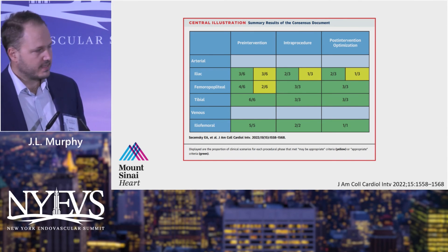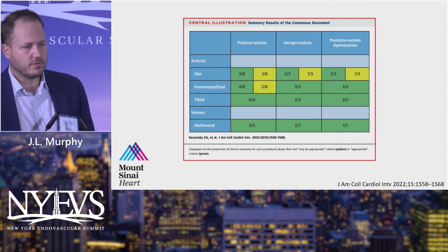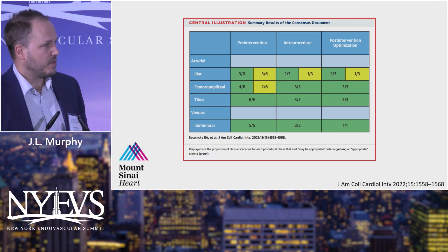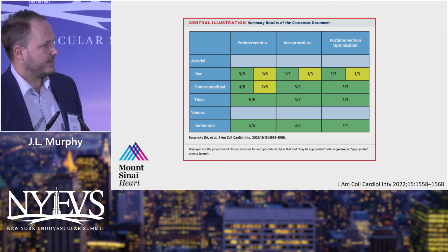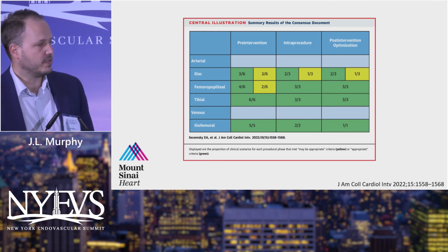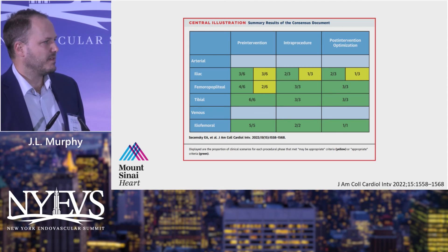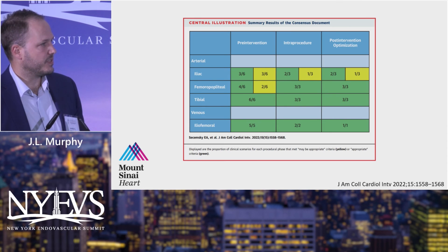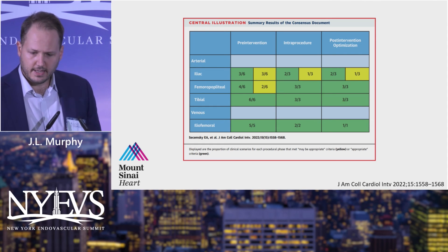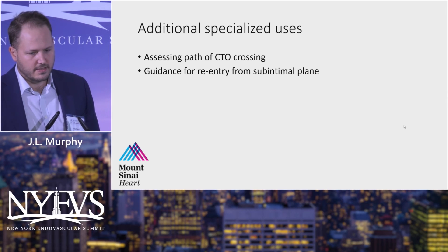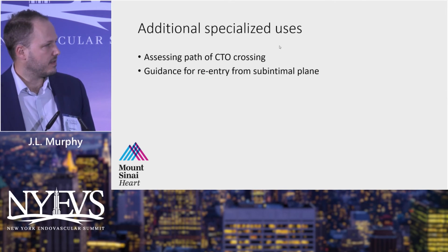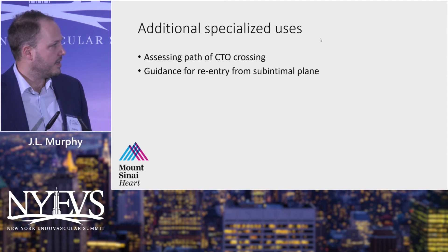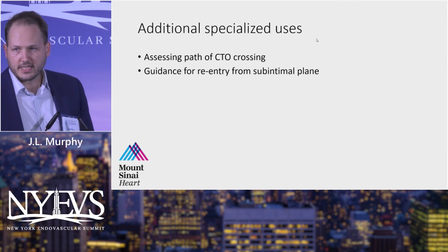This is reflected in a consensus document from experts at VIVA 2021, which concluded that IVUS is probably appropriate in almost everything we do in the lab — both arterial and venous. It may be a little less useful in iliac interventions due to depth-of-field limitations, but in tibial and most femoropopliteal interventions IVUS has something to add. Specialized uses include tracking wire path during CTOs to assess how subintimal you are, which can influence destination therapy, and re-entry using the Pioneer catheter from the subintimal space.